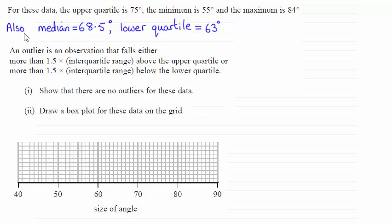Now you'll notice I've put in some extra information here. In an earlier part of this question we found out that the median was 68.5 degrees and the lower quartile was 63 degrees.